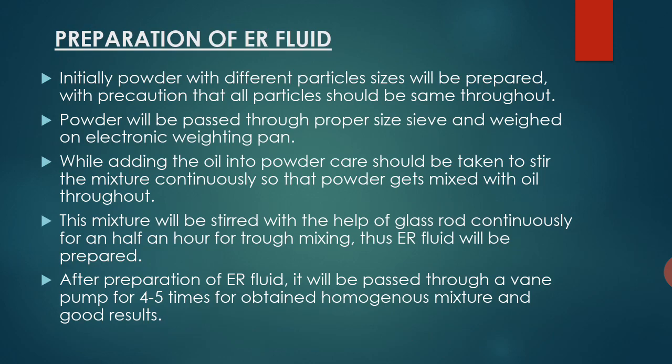Preparation of ER fluids: Initially, powder with different particle sizes is prepared, with precautions that all particles should be the same throughout. The powder is passed through a proper size sieve and weighed with an electronic weighing pan. While adding oil into the powder, care should be taken to stir the mixture continuously so that the powder gets mixed with the oil throughout. This mixture is stirred with a glass rod continuously for half an hour. After preparation, the ER fluid is passed through a vane pump four to five times to obtain a homogeneous mixture.